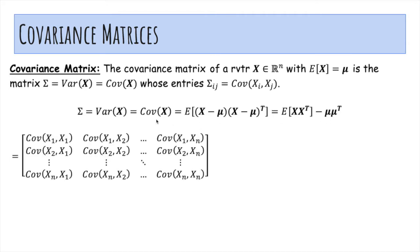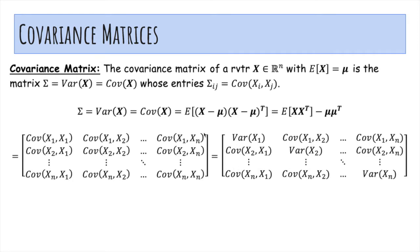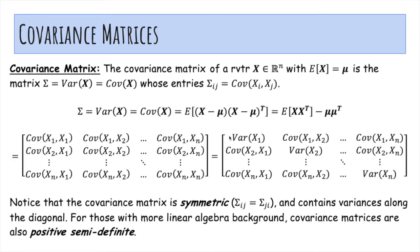And as promised, here's the covariance matrix. Along the diagonal, you can replace the covariance of xi with itself with just the variance of xi. You'll note that this covariance matrix is symmetric, meaning sigma ij equals sigma ji, and contains variances along the diagonal.